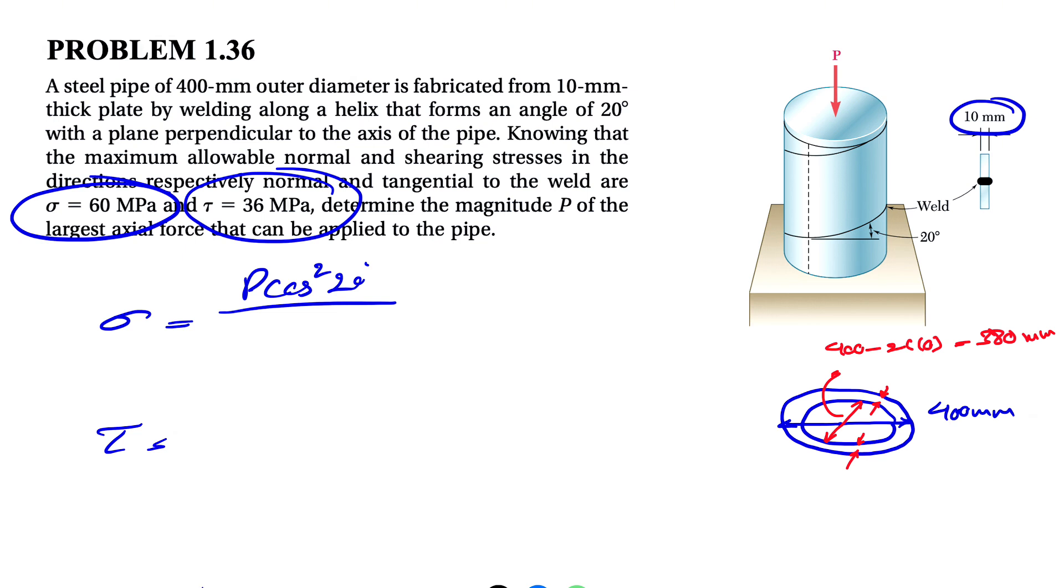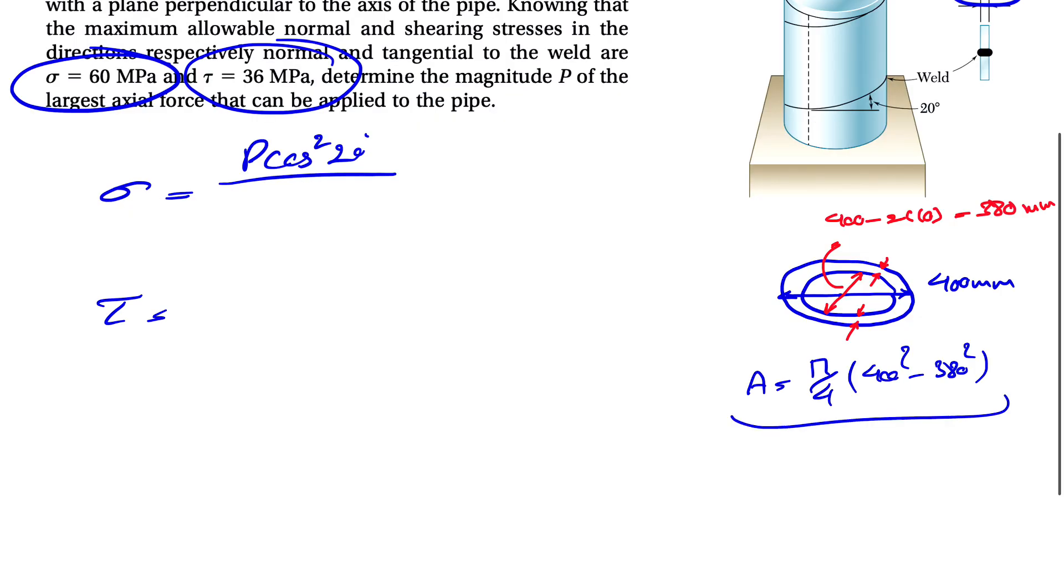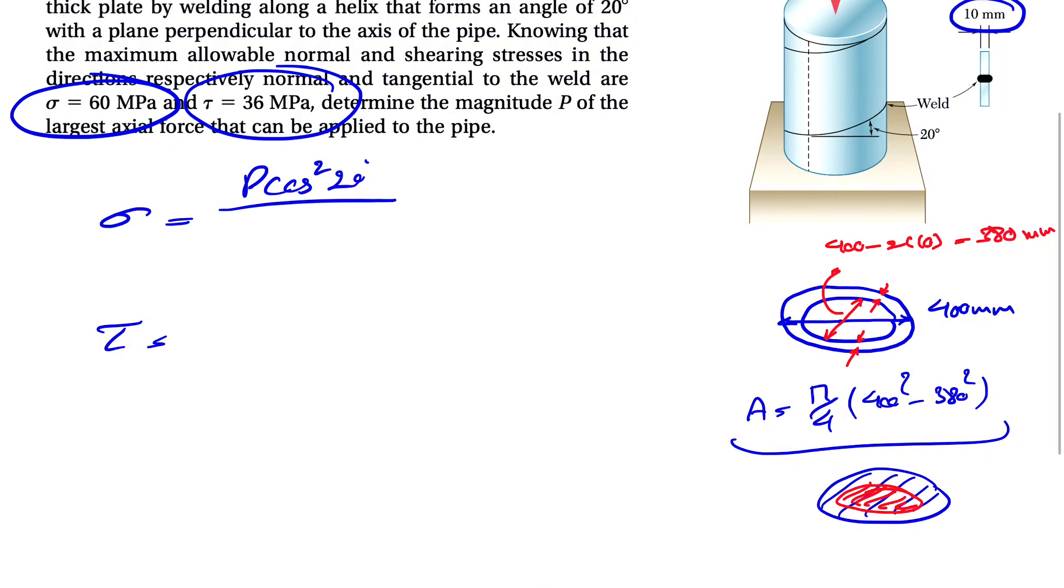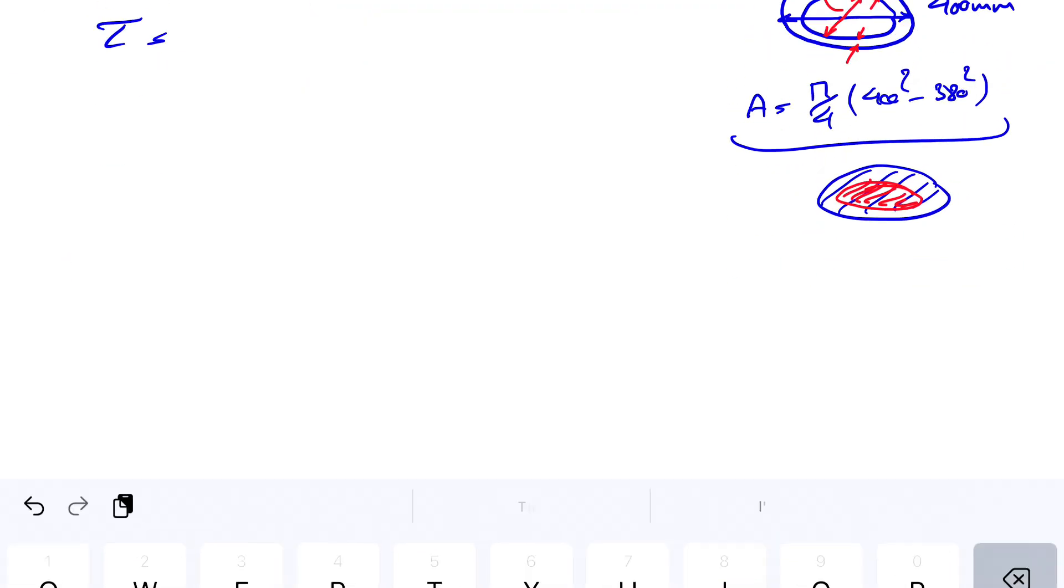So if we want to find the area, we basically have the pi over 4 since we have the diameter, 400 squared minus 380 squared. Or basically, we are subtracting the area of the bigger circle that we have minus the area of the smaller one. So that's going to give us the area of that ring that we are looking for here. So that's the formula for the area that we found.